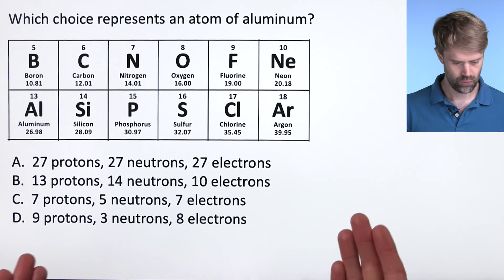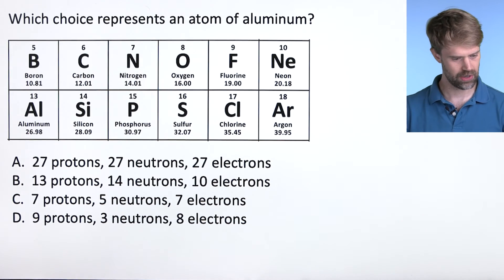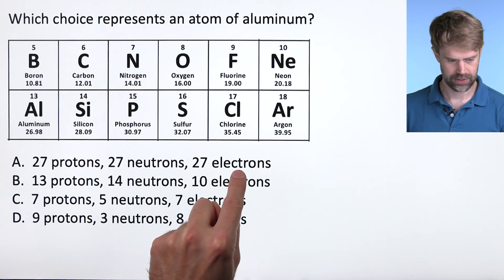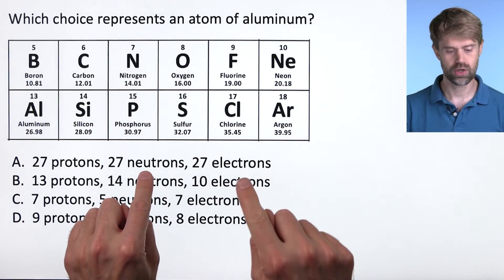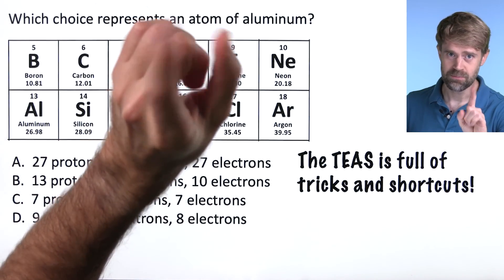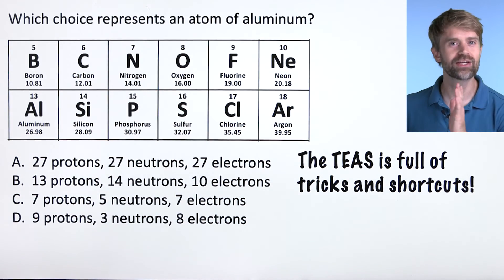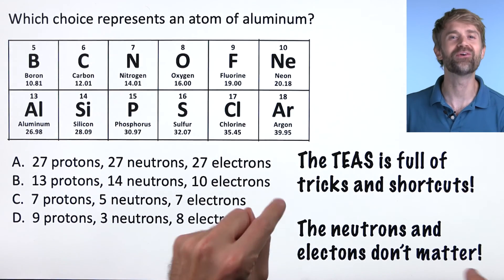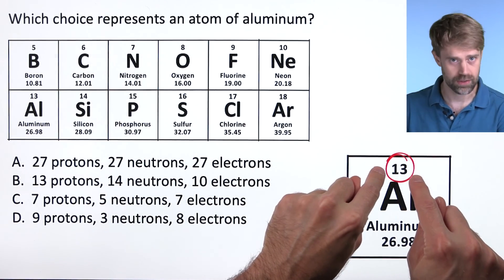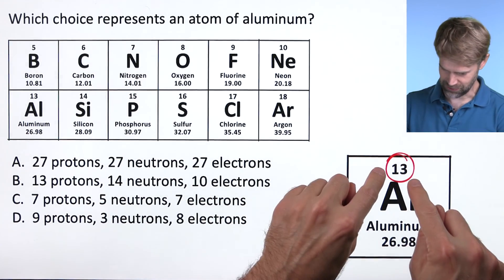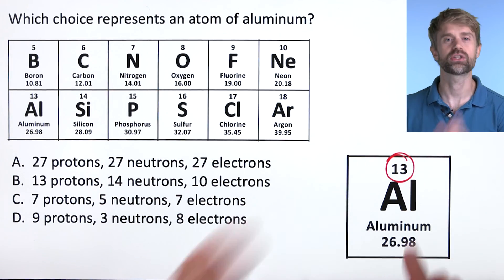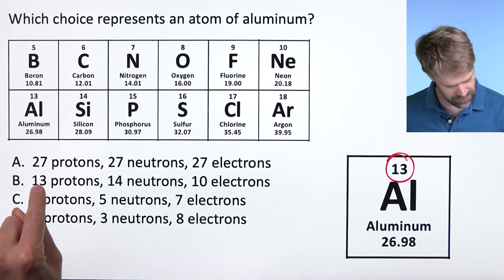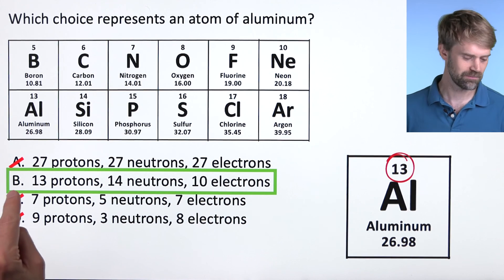One more. Which choice represents an atom of aluminum? And we're given a small section here of the periodic table. Well, this might seem a little scary because all of the choices list protons, neutrons, and electrons. And we haven't talked about neutrons and electrons in much detail yet, but the TEAS is full of tricks and shortcuts. For this question, the neutrons and electrons are just there to trick you. They don't matter. Remember, it's the number of protons, the atomic number that determines the element. Aluminum, which you can see right here, has atomic number 13. So every aluminum atom has 13 protons. Simple as that. Ignore everything else. 13 protons, there it is. All the others are wrong. Choice B.